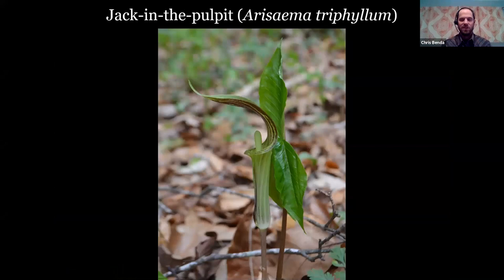Jack-in-the-pulpit — most people know this remarkable wildflower. Arisaema triphyllum. This is in the Arum family, so we have a spathe and spadix again. The spathe is the pulpit, and the spadix is Jack inside — that's where the flowers are born on that little tube. Its cousin is the green dragon, with a very similar flower structure but a different shaped leaf — really neat ones to always enjoy finding in the woods.